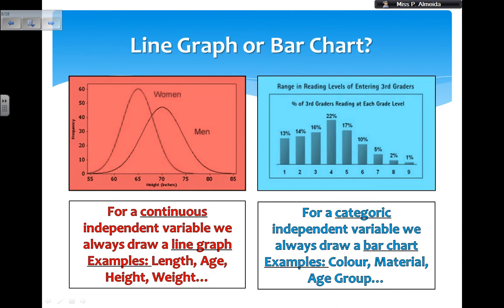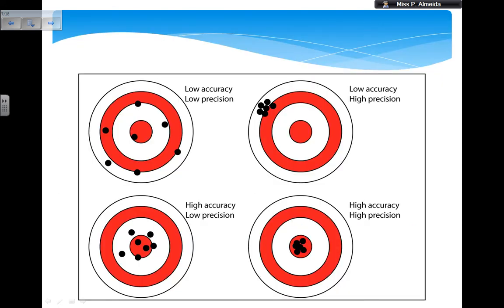When doing a graph, should you do a line graph or a bar chart? If you have a continuous independent variable, you should draw a line graph. A continuous variable is one where the values can flow smoothly — like length, age, height, or weight; you can have 2 kg, 2.1 kg, 2.2 kg. On the other hand, if you have a categoric variable, you should do a bar chart. A categoric variable is not continuous — it's in groups or categories, like color, material, or age group. You can't have yellow-and-a-half or half-lead-half-glass.